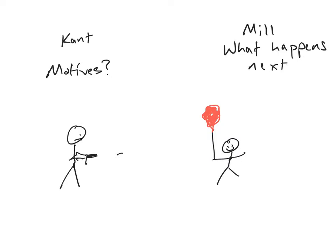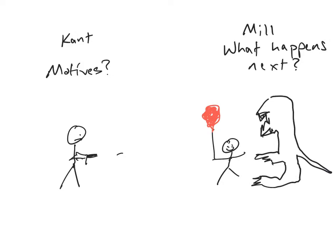Mill has to know the result in order to evaluate whether it's morally good or not. If we fill in some more details with some awesome artwork, we see that there is a vicious monster — and that is one well-drawn vicious monster. It has a tail, and it's about to attack this poor child playing with the balloon.